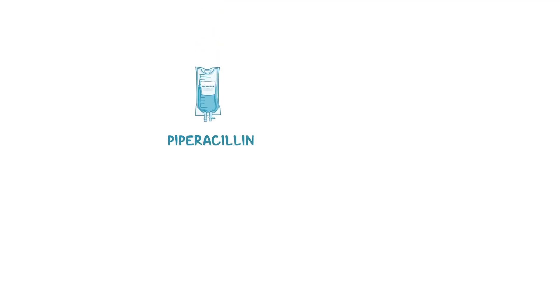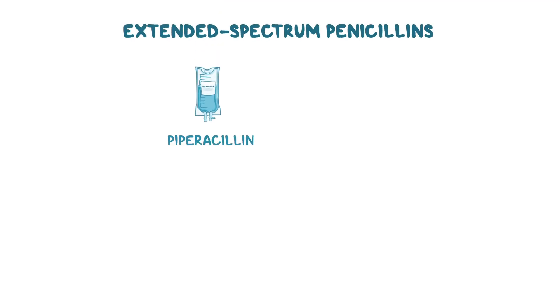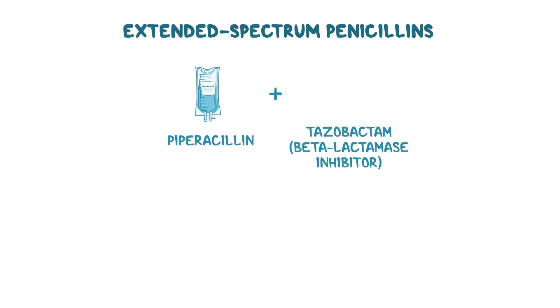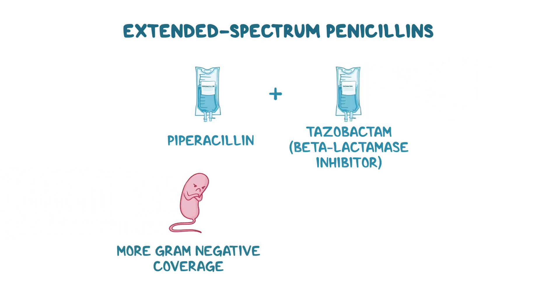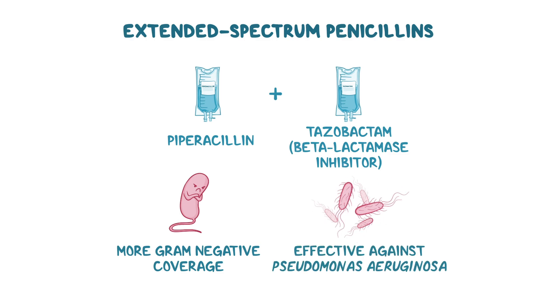Finally, there's piperacillin, an extended-spectrum penicillin, which is combined with tazobactam, a beta-lactamase inhibitor, and administered intravenously. This medication combination has more gram-negative coverage. Most notably, it's effective against Pseudomonas aeruginosa, which is why it's also called an anti-pseudomonal penicillin.